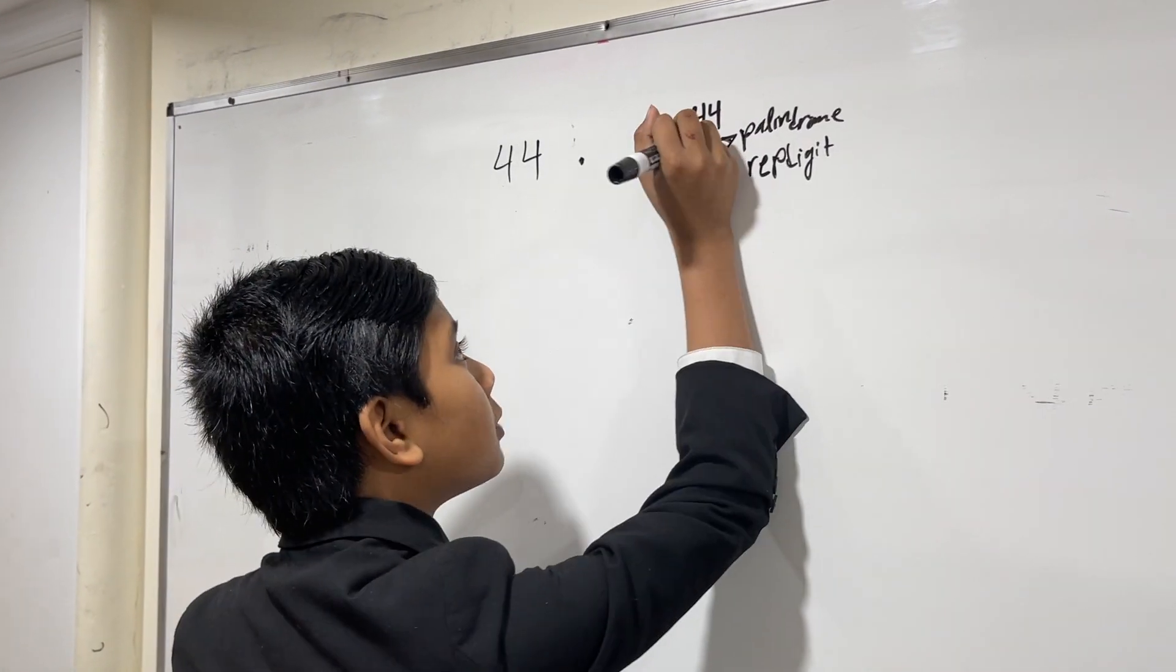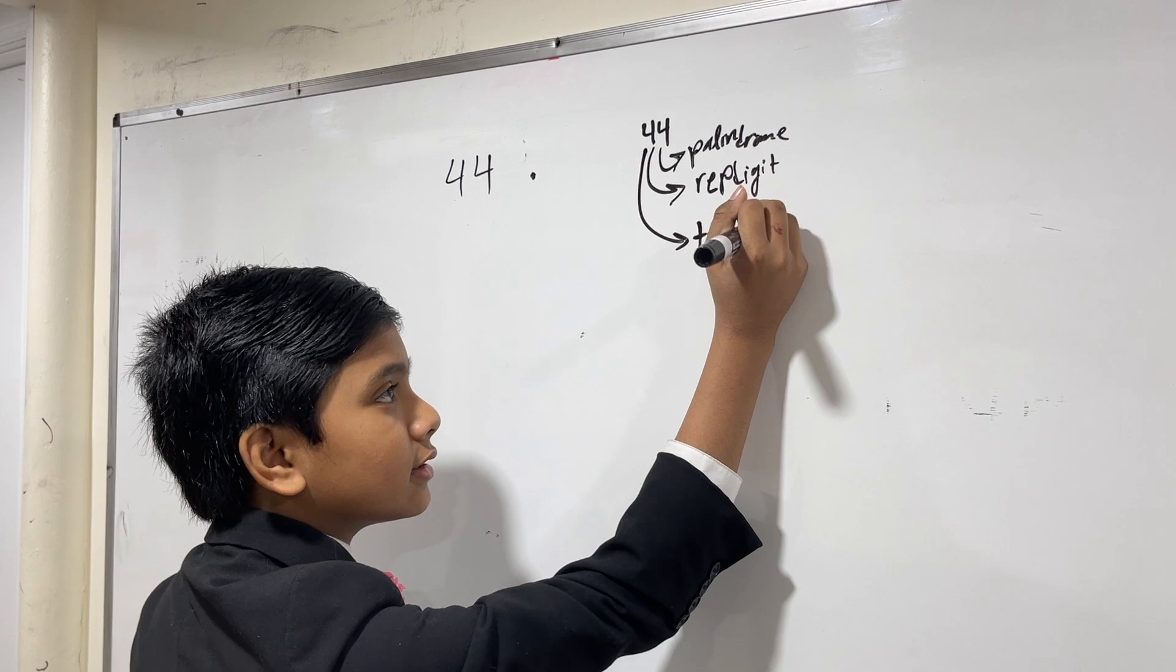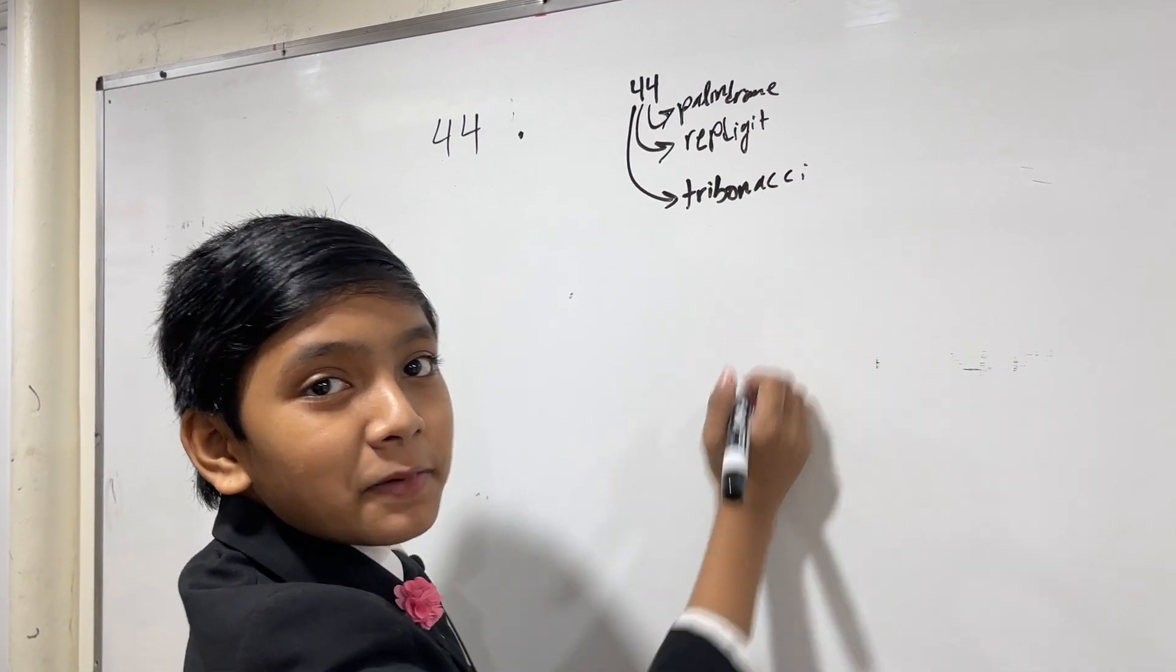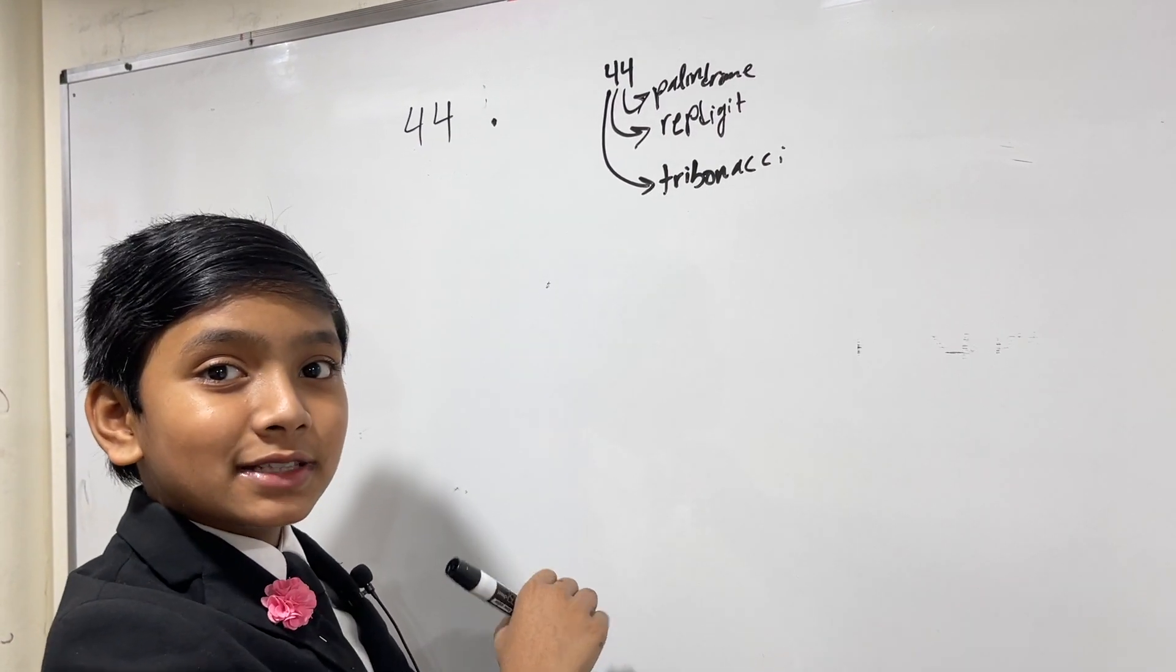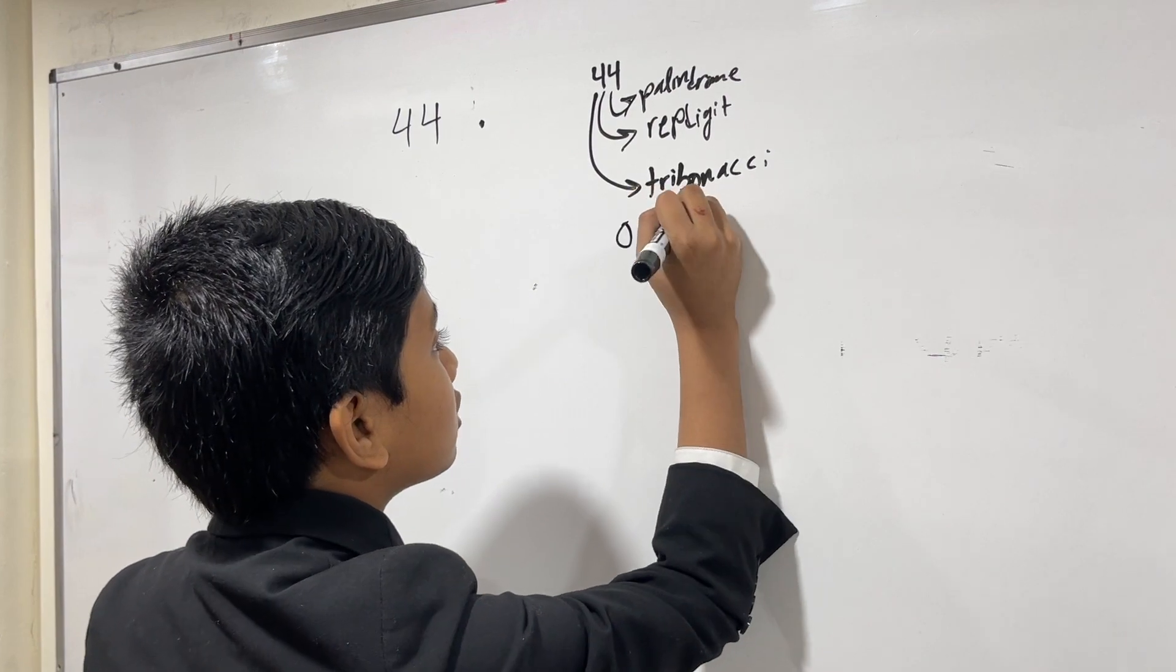44 is also part of the Tribunacci sequence. Fibonacci? No, Tribunacci. Instead of Fibonacci being the sum of the last two numbers, Tribunacci is the sum of the last three numbers. There's also Petronacci, but that's just weird.